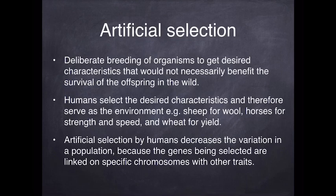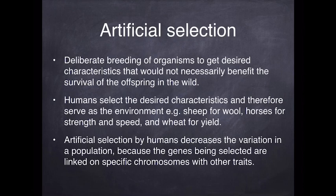The problem with artificial selection is that because genes are actually linked on chromosomes, as you select for one particular gene or trait, you are by default also selecting for a whole bunch of other traits. Unfortunately, sometimes the parent you're choosing will have a mutation or some other disadvantageous trait linked on that same chromosome, so every time you select for the trait you want, you're also getting traits that you don't necessarily want.